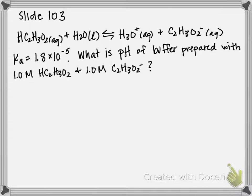So question states, the Ka, or the acid dissociation constant for acetic acid, is 1.8 times 10 to the negative 5. What is the pH of a buffer prepared with 1.0 M acetic acid and 1.0 M acetate ion?